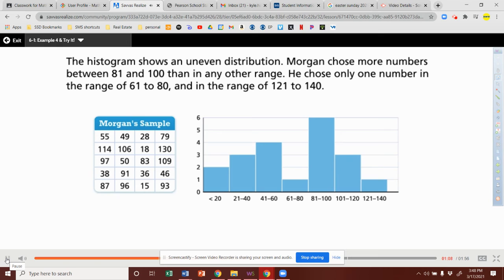The histogram shows an uneven distribution. Morgan chose more numbers between 81 and 100 than in any other range. He chose only one number in the range of 61 to 80 and in the range of 121 to 140.